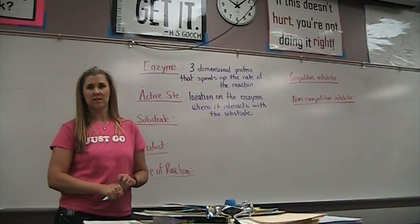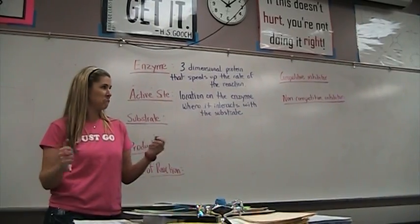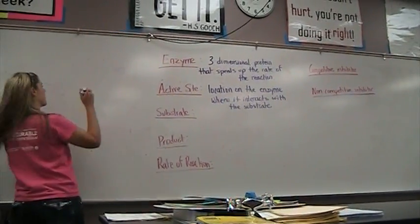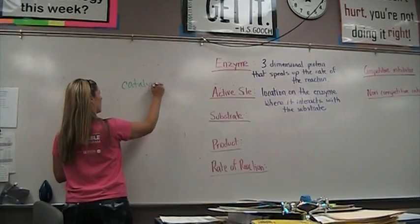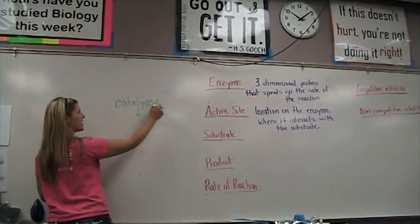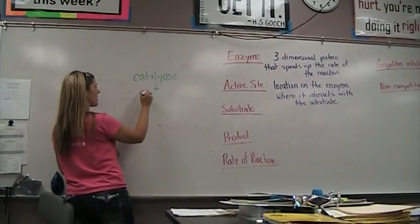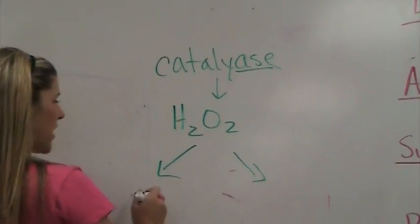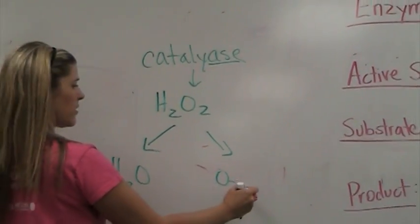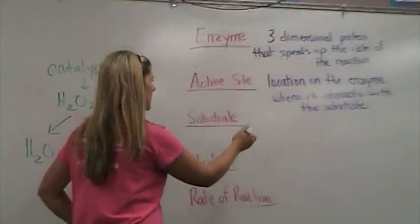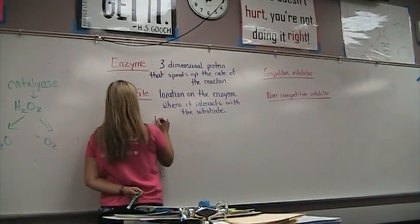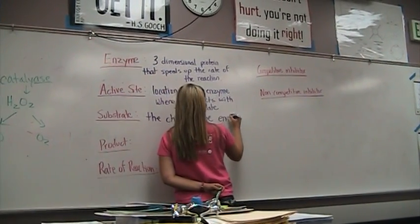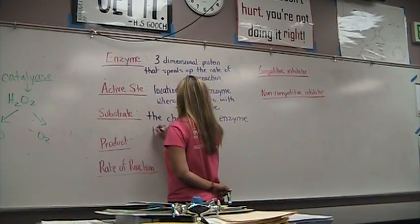The substrate is the thing that the enzyme reacts with — the thing that gets broken down, the thing the enzyme's working on. So when we did the catalase lab, we had catalase as the enzyme, working on the hydrogen peroxide, which was the substrate. And it got broken down into H₂O and O₂. The substrate is the chemical the enzyme is interacting with.